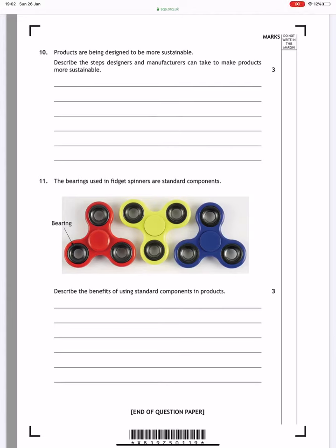Okay, in this question, question 10, it says products are being designed to be more sustainable. Describe the steps designers and manufacturers can take to make products more sustainable.